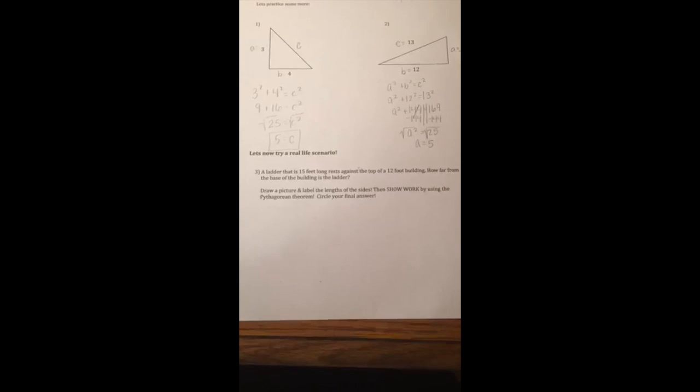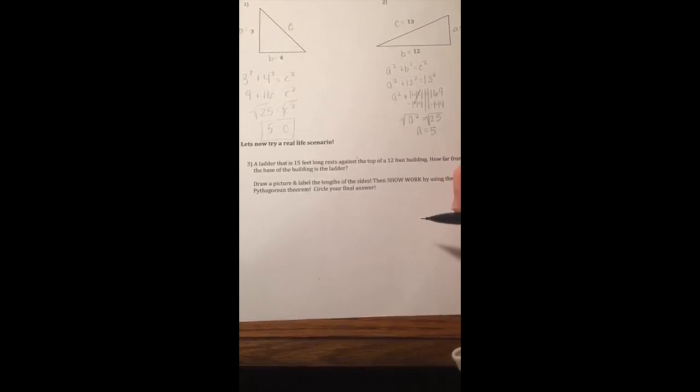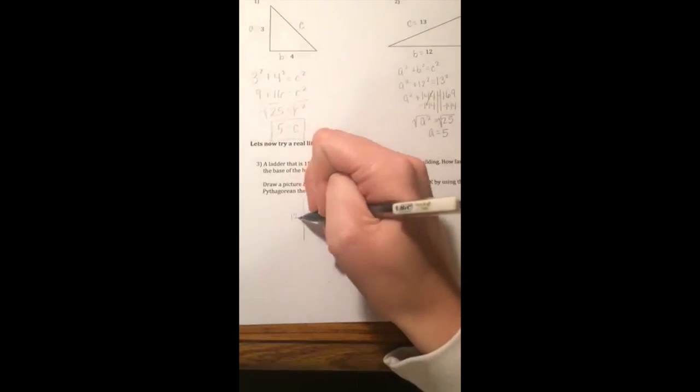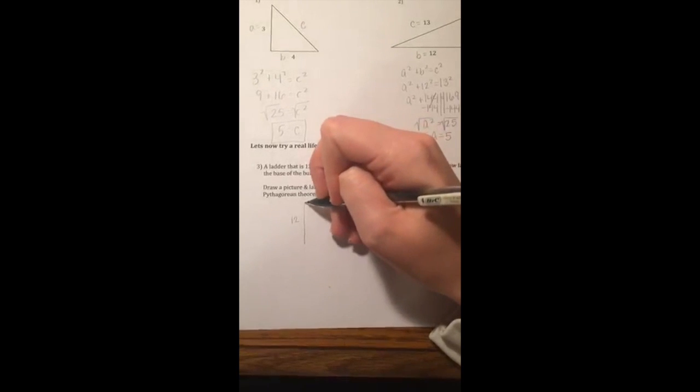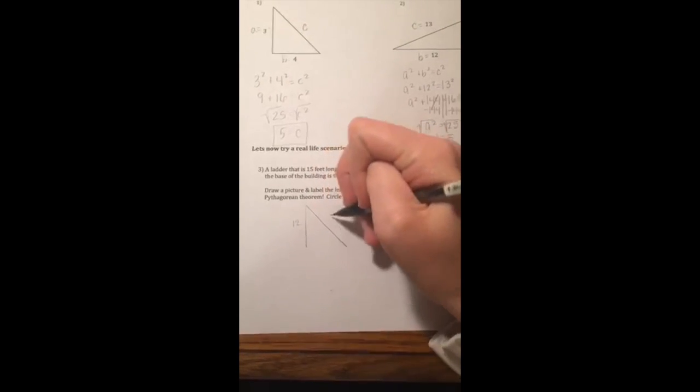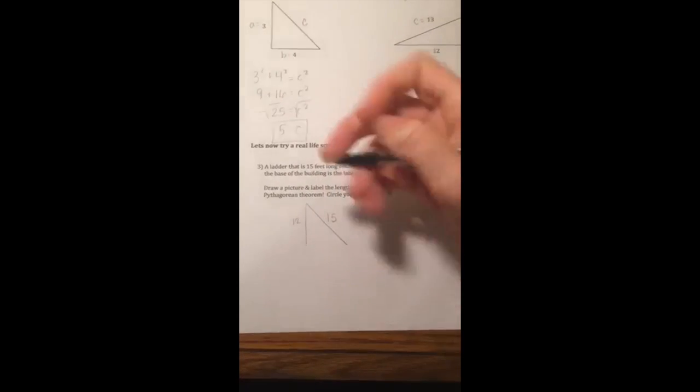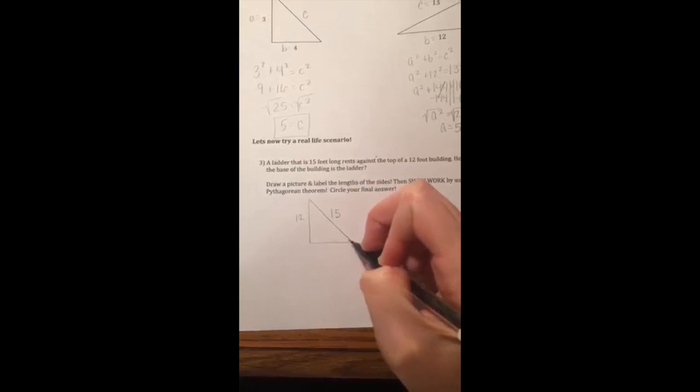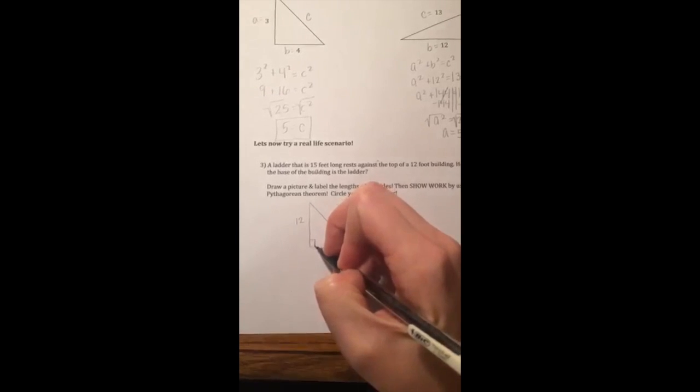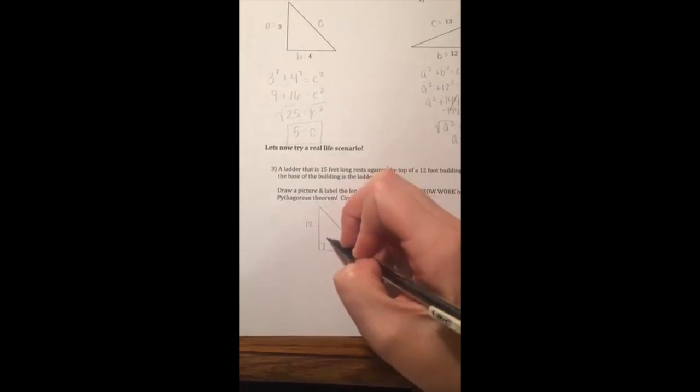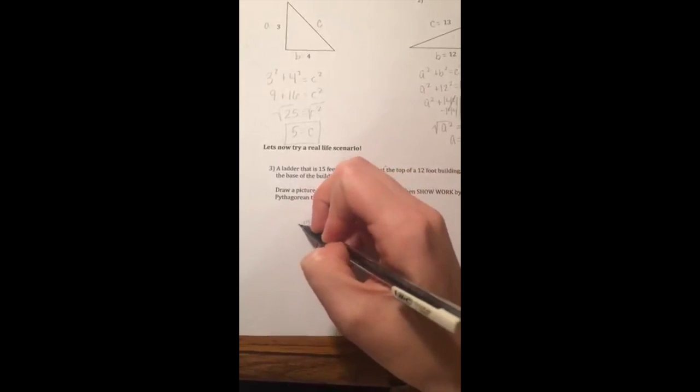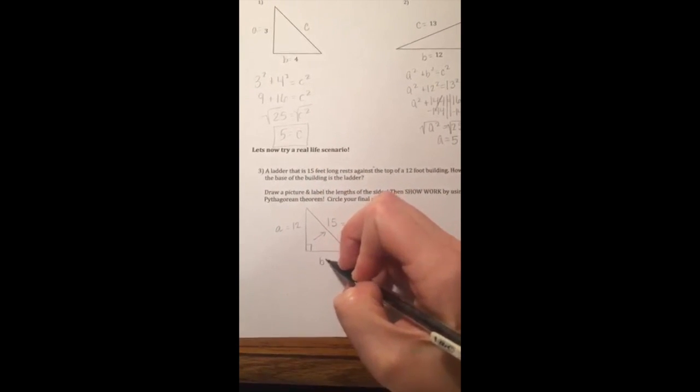So let's draw a picture to model the situation. A ladder that is 15 feet long rests against the top of a 12 foot building. So this will be my building, it's 12 feet high, and a ladder runs against the top of it, that's 15. We want to find how far the ladder is from the base of the building. Oh look, we made a right triangle. There's our right angle. Opposite of the right angle is your hypotenuse, so that's 15. 12 is A. We're missing B.